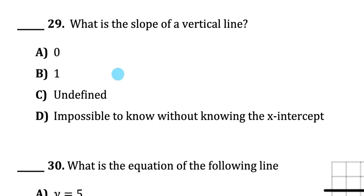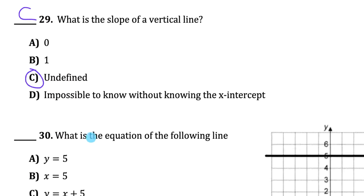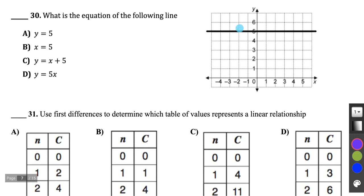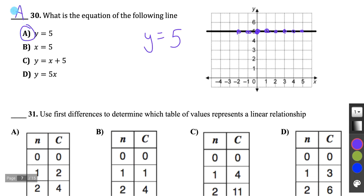Question 29: What is the slope of a vertical line? Vertical lines have an undefined slope, answer C. If it were horizontal, it would have a slope of 0. Question 30: What is the equation of the following horizontal line? The equation of any horizontal line is y equals the y-intercept. The y-coordinate of every point on this line is 5, so the equation is y equals 5, answer A.